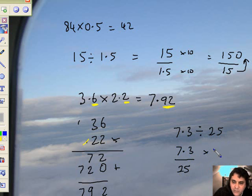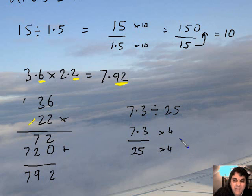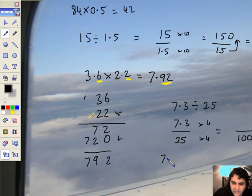But look, there is hope. If we multiply the top and bottom by 4, we get the bottom one out of 100. Look. 25 times 4 is 100. And 4 times 7 is 28. Let's just do a little sum here. So 7.3 times 4. Ignore the points just for the moment.